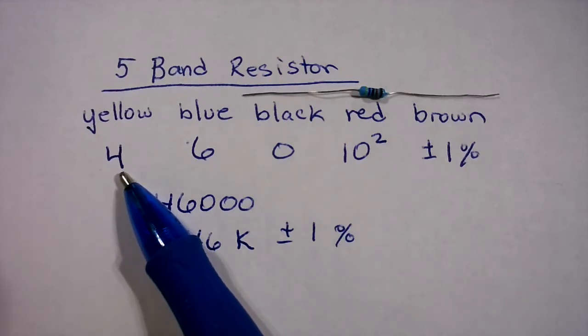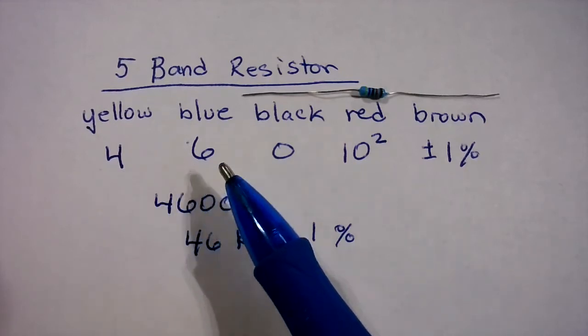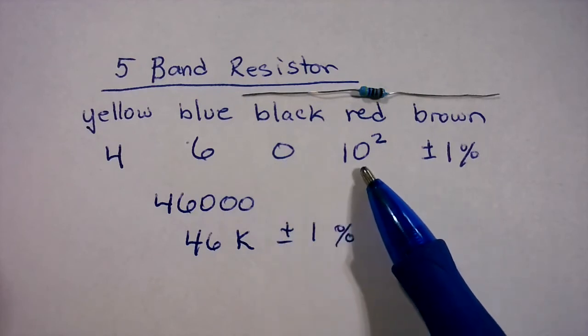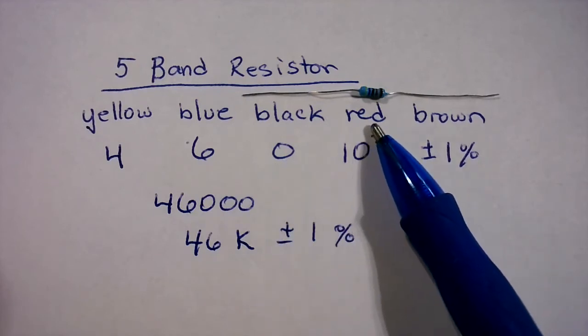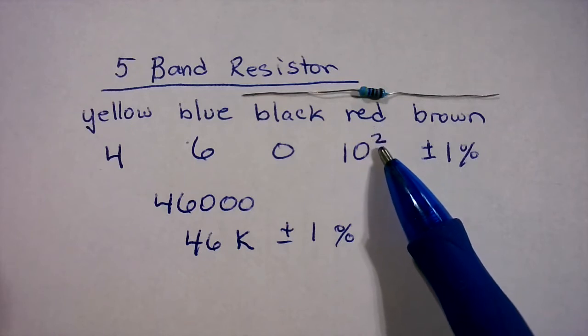So the first bar, yellow, is 4. Blue is 6. Black means 0. And then it's 10 to the power of whatever the color is, in this case red. Red is 2.